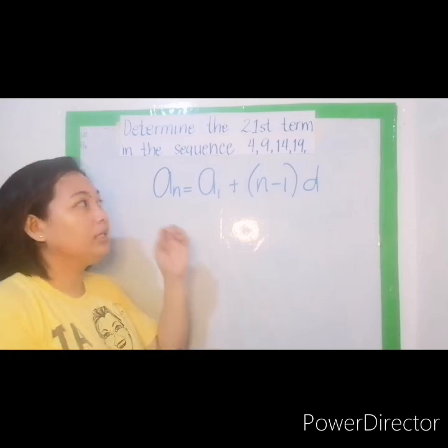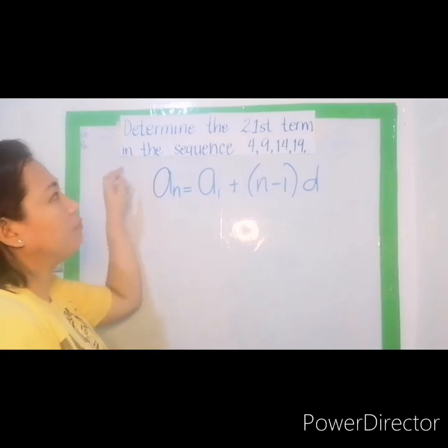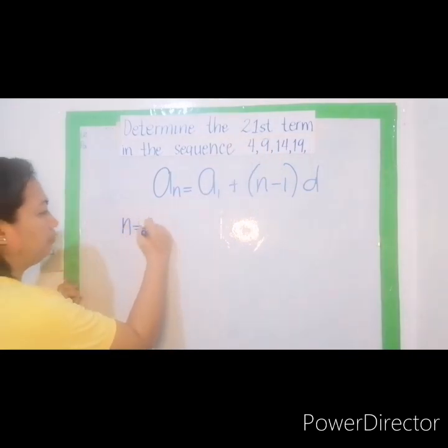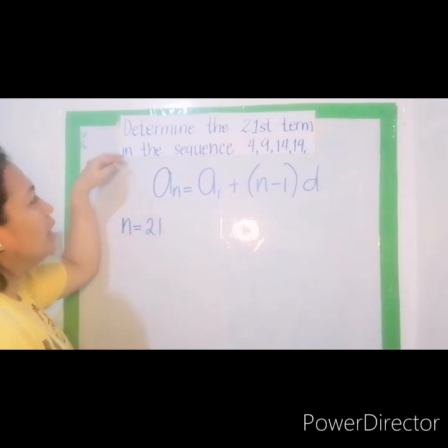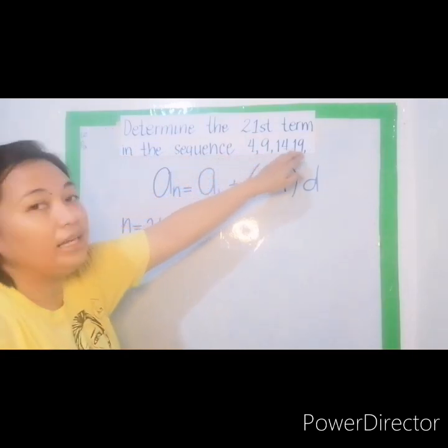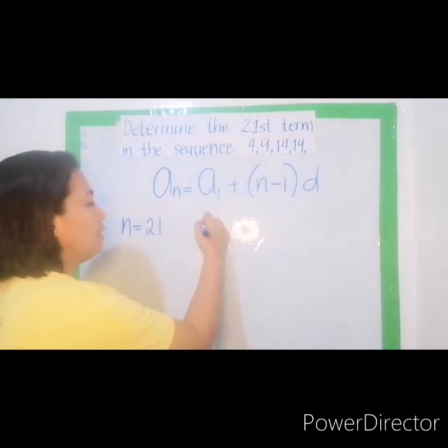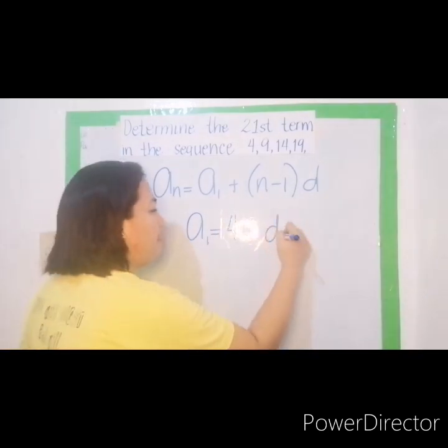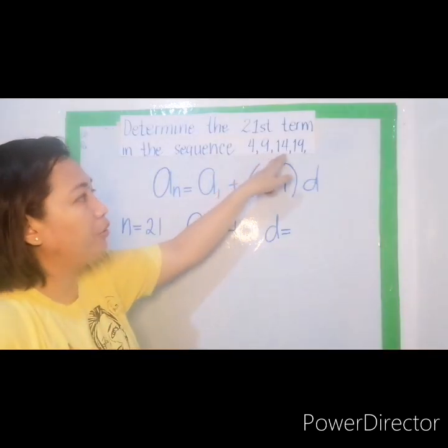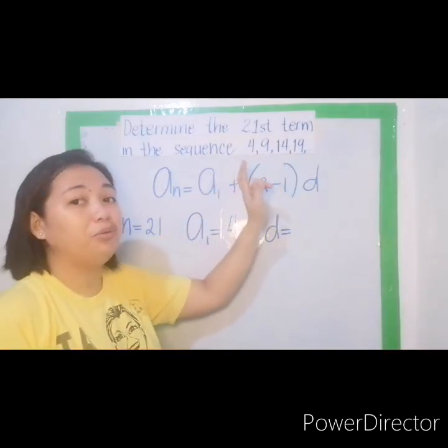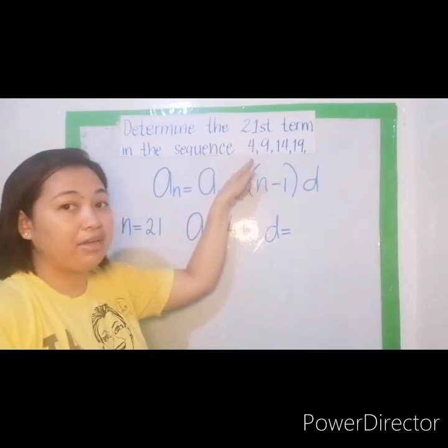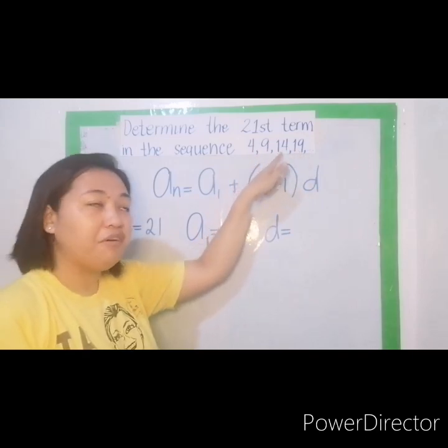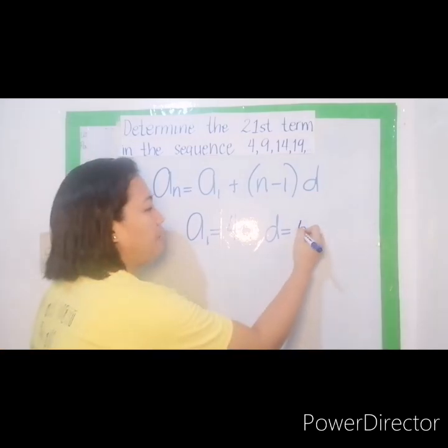Now let us identify the given for this question. Determine the 21st term in the sequence 4, 9, 14, 19 and so on. So 21st, that is the value of n. 4 is the first term, so that represents your a sub 1. And how about the common difference? To get the common difference you have to subtract: 9 minus 4 that is 5, 14 minus 9 that is also 5, 19 minus 14 is also 5. Therefore, our common difference is 5.